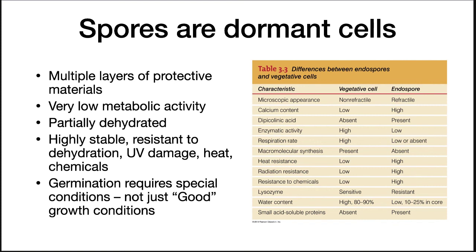The table lists all the properties of endospores versus vegetative cells. Spores have been shown to survive for millions of years — endospores extracted from ancient sea salt estimated to be more than 250 million years old were able to germinate and grow. That is amazing.